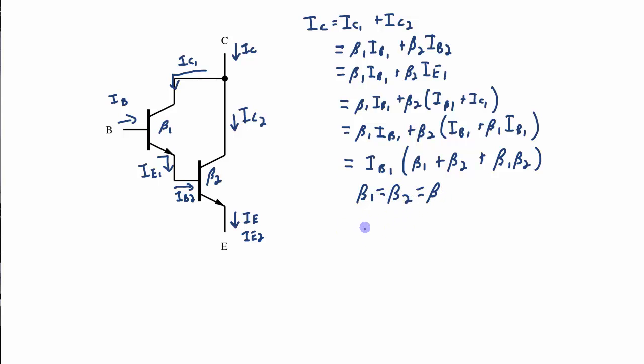Then IC will be equal to 2 beta plus beta squared all times IB1. And generally this beta is fairly large. Like if you think of that as say around 100, then this term would be 200 and this term would be 10,000.